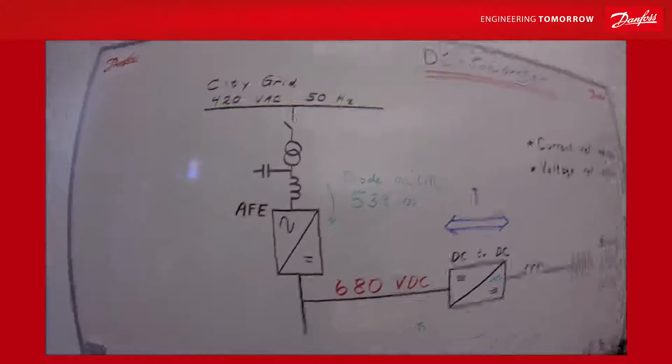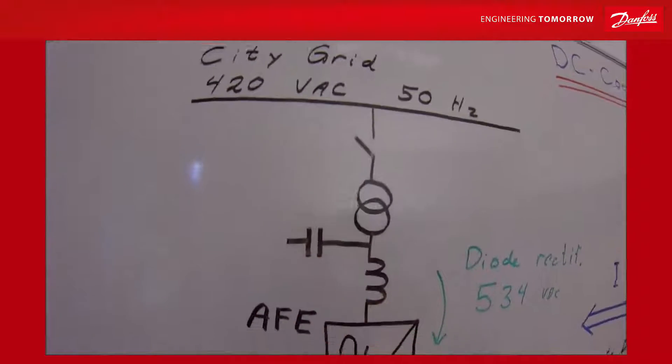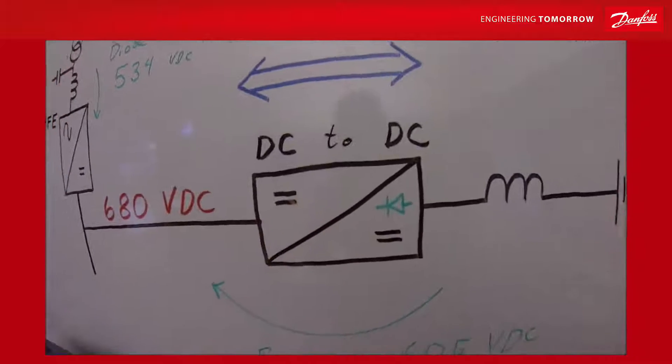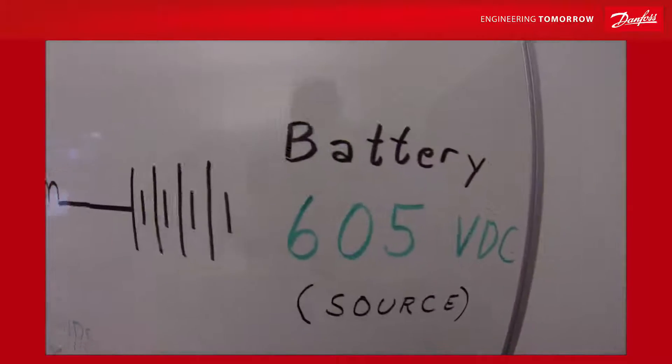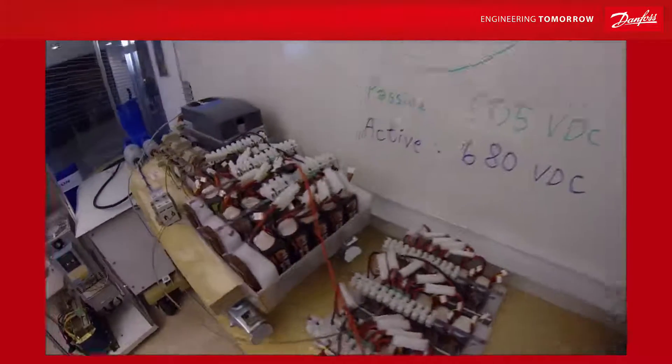The simulator we are going to run today will be an active front end connected to the city, a common DC bus system and a DC DC converter with a battery of about 605 volts. This is a lithium ion battery.